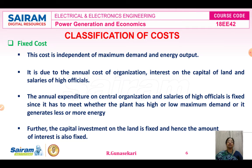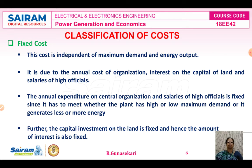Now we studied about the classification of cost. The first cost is fixed cost. This cost is independent of the maximum demand and energy output. The fixed cost is due to the annual cost of the organization, interest on the capital of the land, and salaries of higher officials. The annual expenditure on central organization and salaries of high officials is fixed whether the plant has high or low maximum demand or generates less or more energy. The capital investment on land is fixed, and therefore the amount of interest is also fixed.